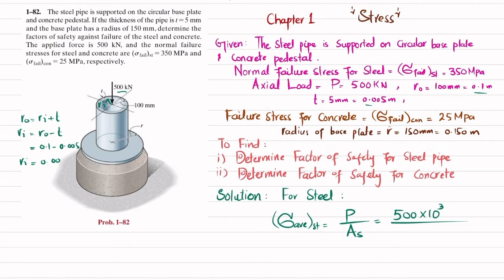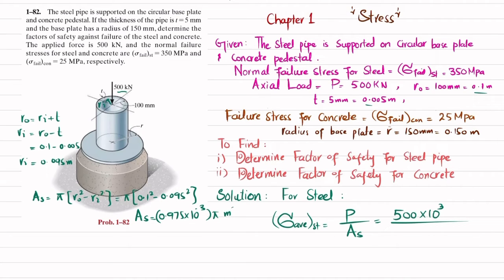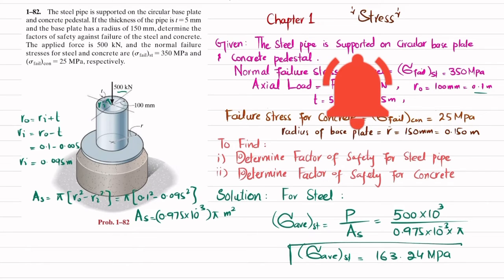The area of the steel pipe equals π × (r_outer² − r_inner²) = π × (0.1² − 0.095²), which gives 0.975 × 10⁻³ × π square meters. Dividing the load by this area, the average normal stress in the steel pipe comes out to be 163.24 megapascals.